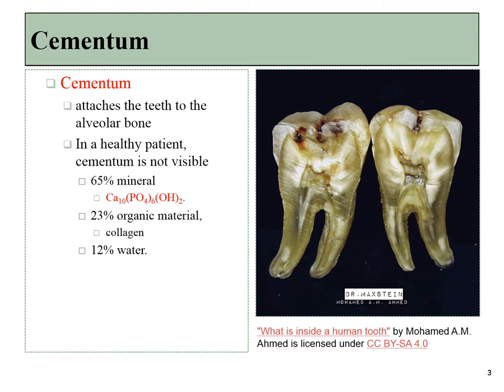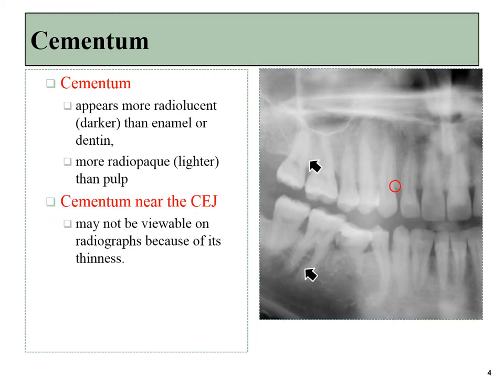Cementum is a thin layer of tissue covering the dentin on the roots. Similar to dentin and enamel, it is composed of the same minerals found in bone tissue — calcium hydroxyapatite crystals — as well as collagen fibers and a small amount of water. It is not as strong or as dense as enamel or dentin, so it shows up as more radiolucent than those tissues, but having that mineral component makes it denser than pulp, so it's more radio opaque than that.